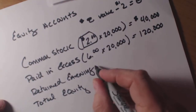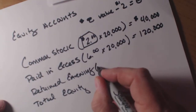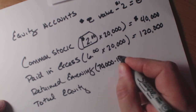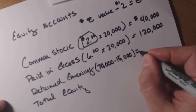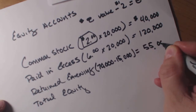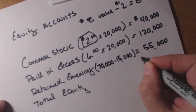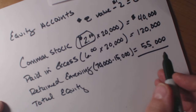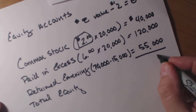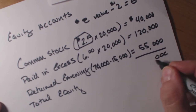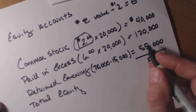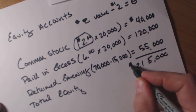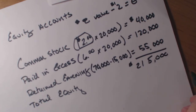Retained earnings is exactly what we calculated: $70,000 minus $15,000 equals $55,000. Drawing a line to add these up, the total equity — adding common stock, paid-in excess, and retained earnings together — equals $215,000 in total equity.